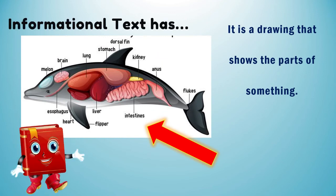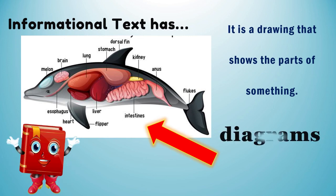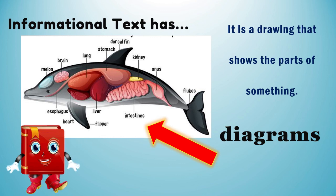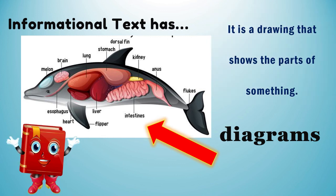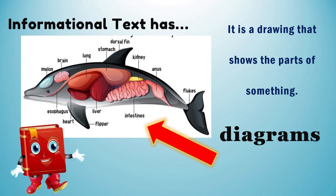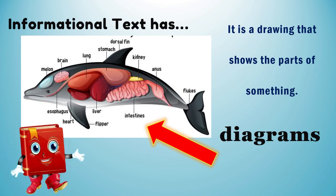Another feature of informational text is diagrams. It is a drawing that shows the parts of something. In this picture, we have an example of the dolphin parts.